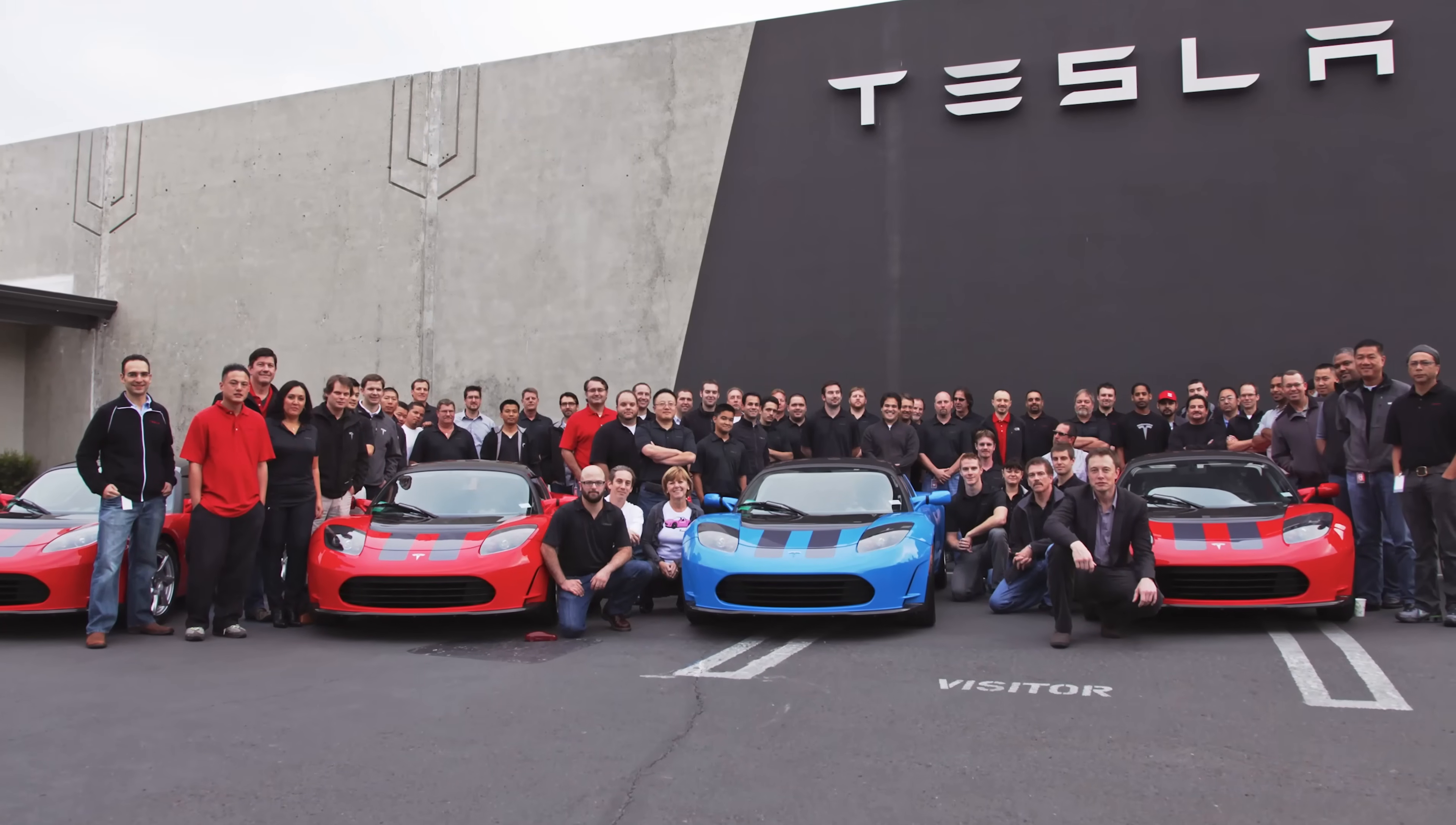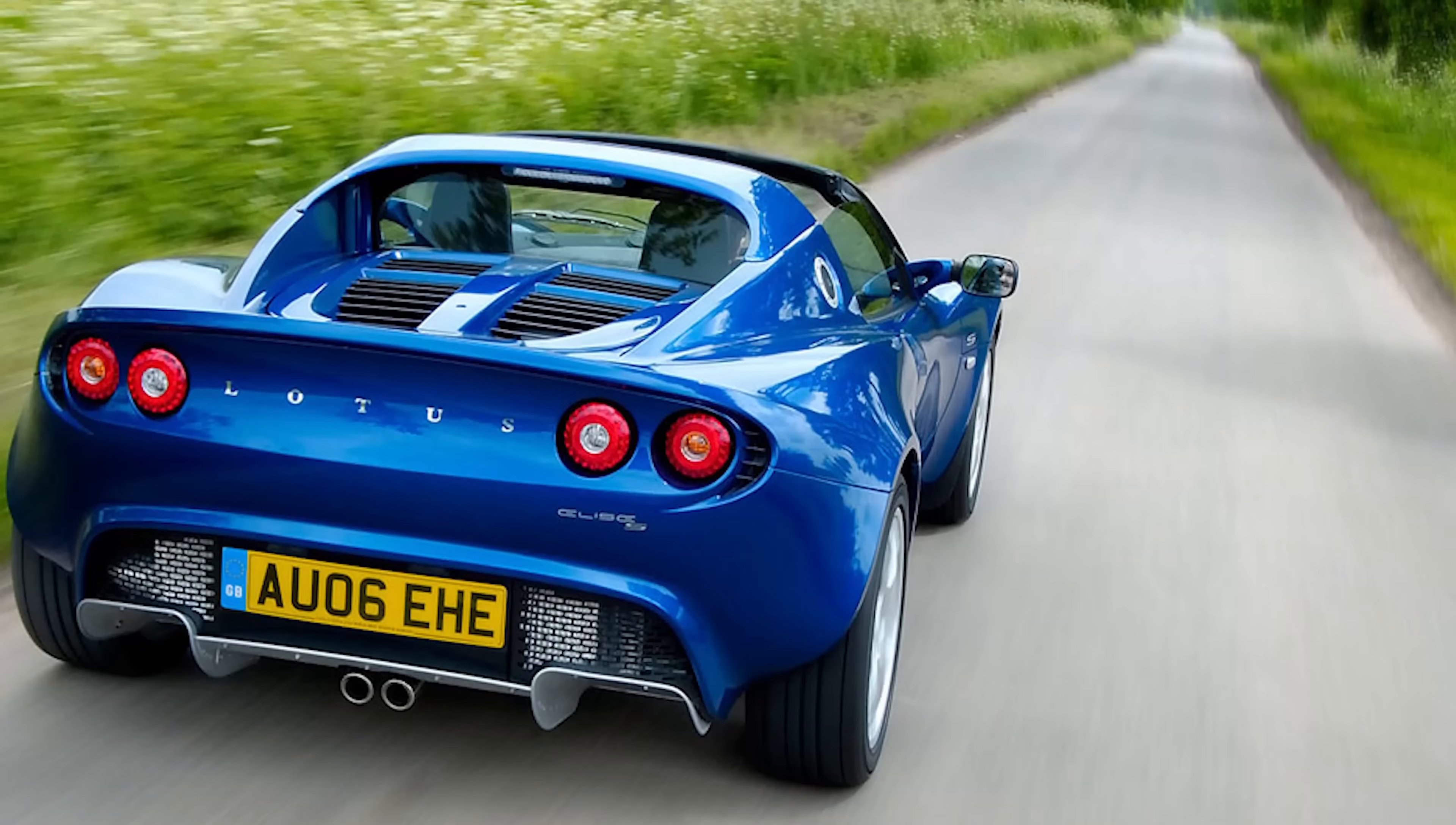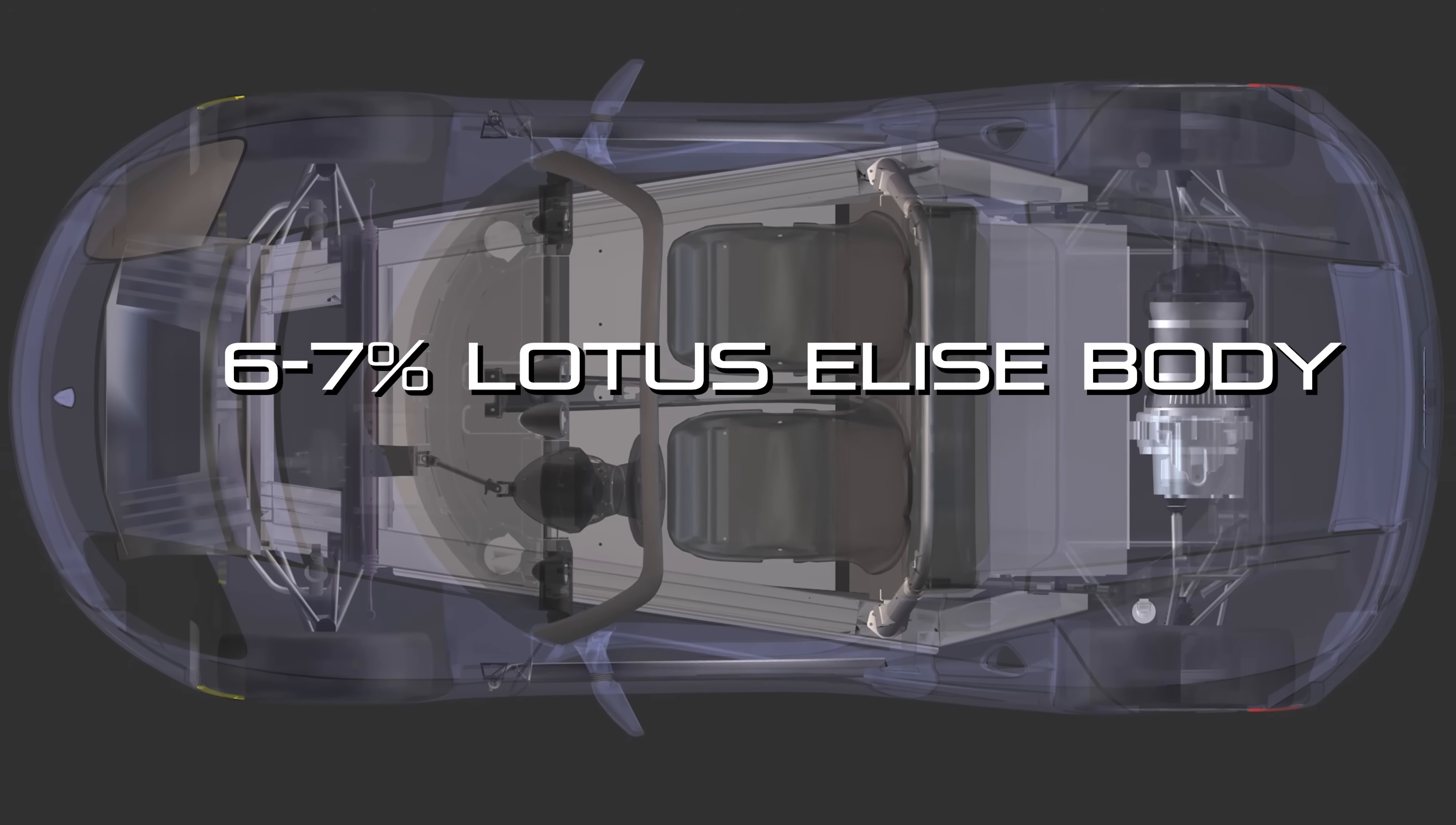Tesla was not always a giant company. When they got started, they had a dream to make an electric sports car. Since all they had was an electric drive train and no ability or facility to make car bodies, they went to Lotus in the UK and picked the Lotus Elise chassis and went through the process of electrifying this sports car. Although it sounds simple, they eventually modified the Elise so much to make everything fit that only six to seven percent of this car today is still Lotus Elise.